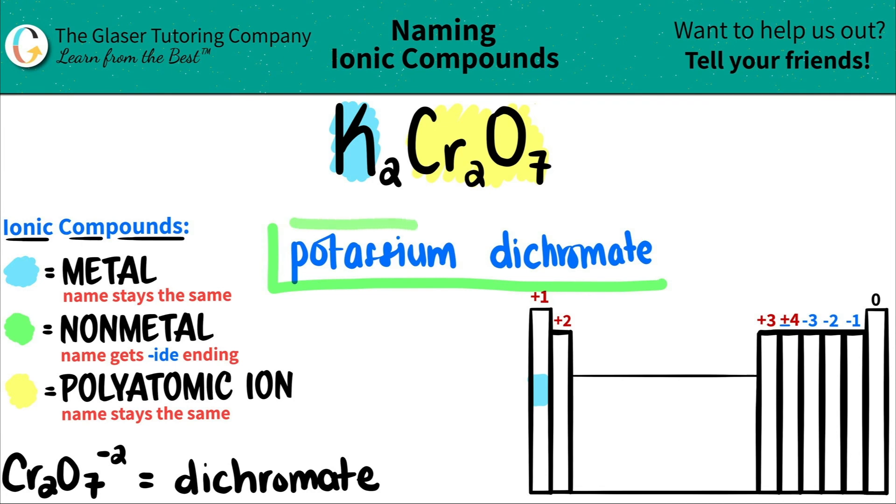Pretty simple, right? So K2Cr2O7 is called potassium dichromate. And that's it.